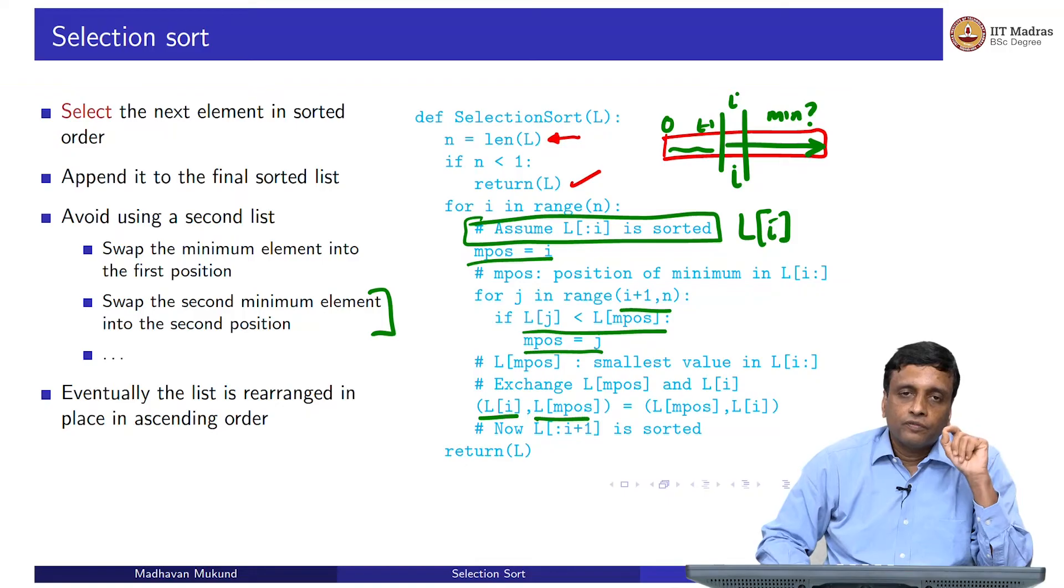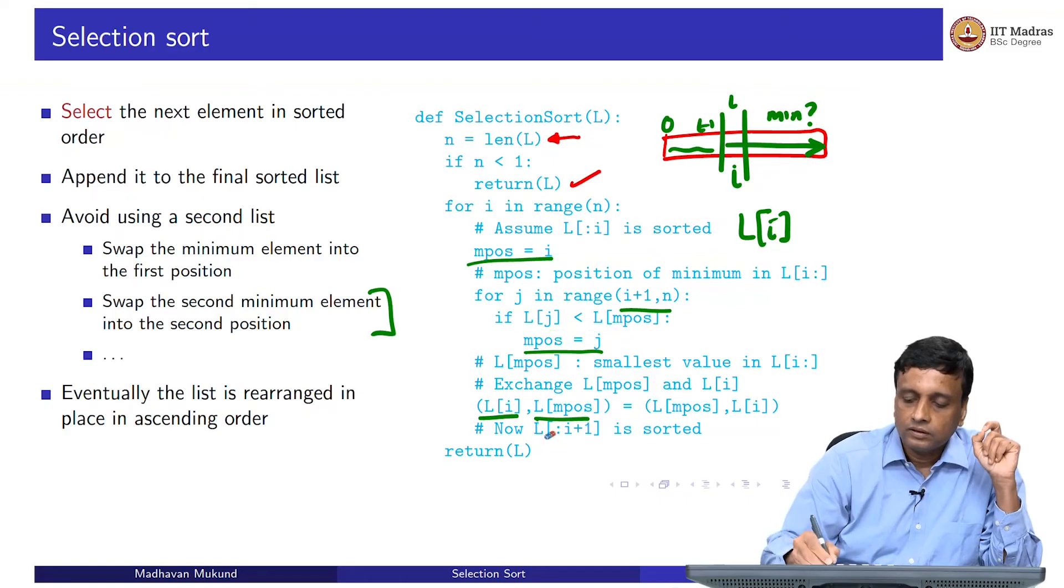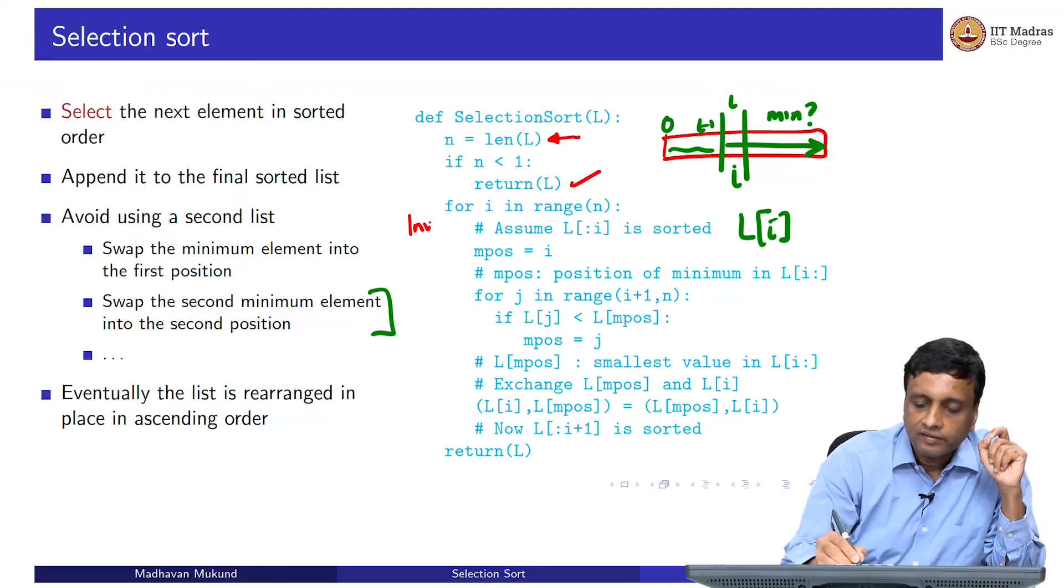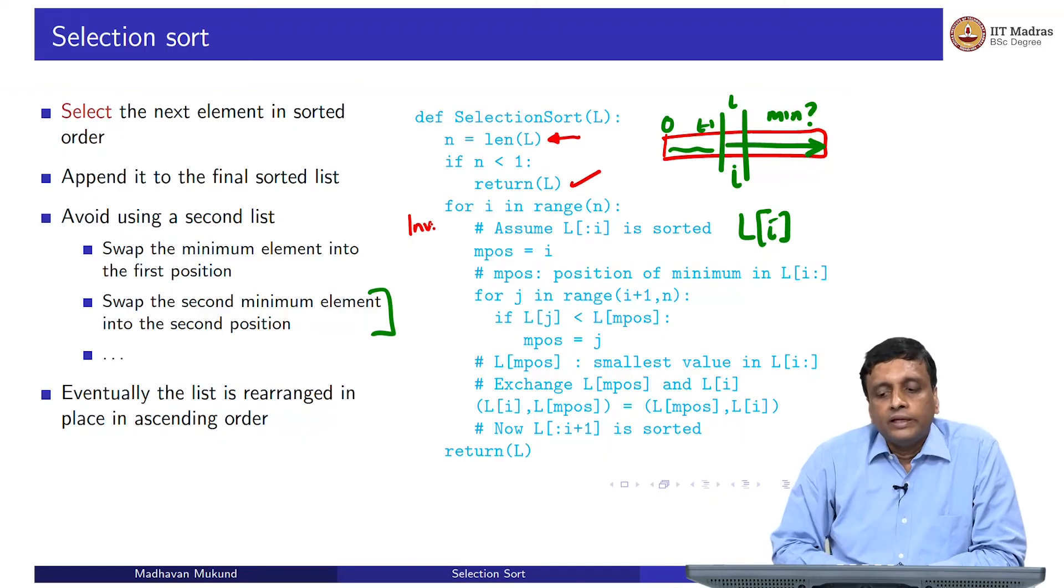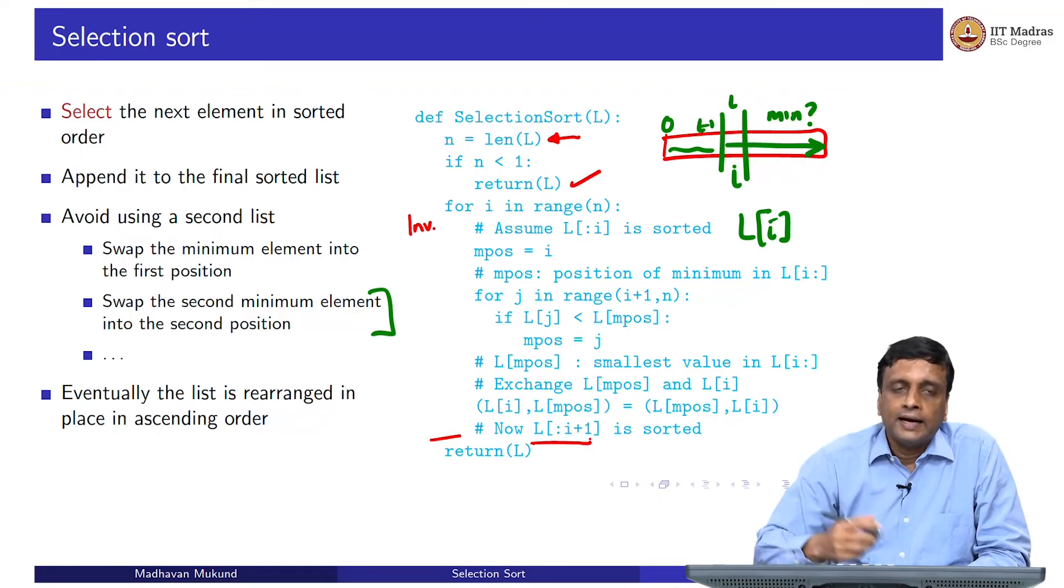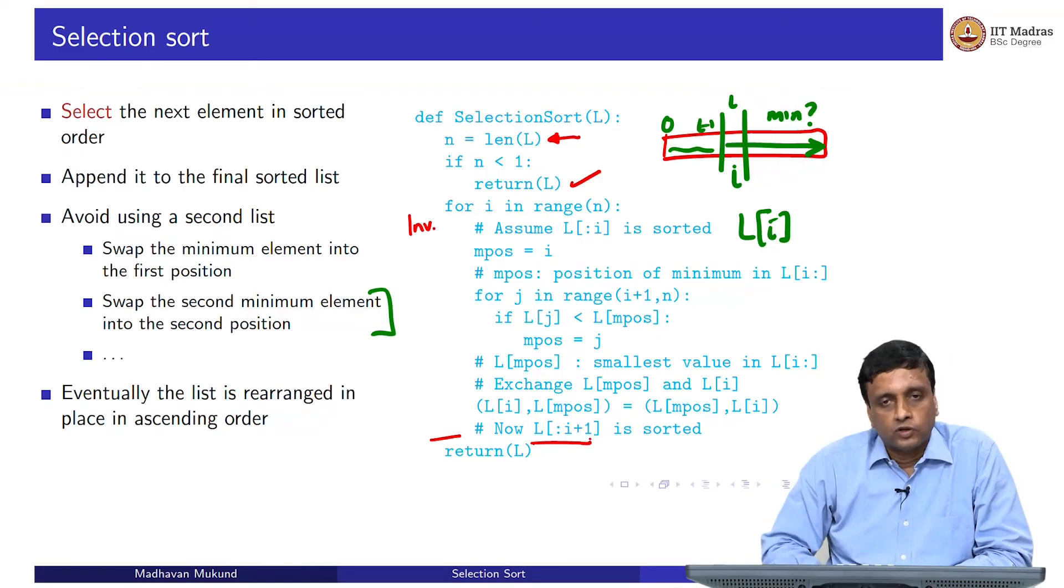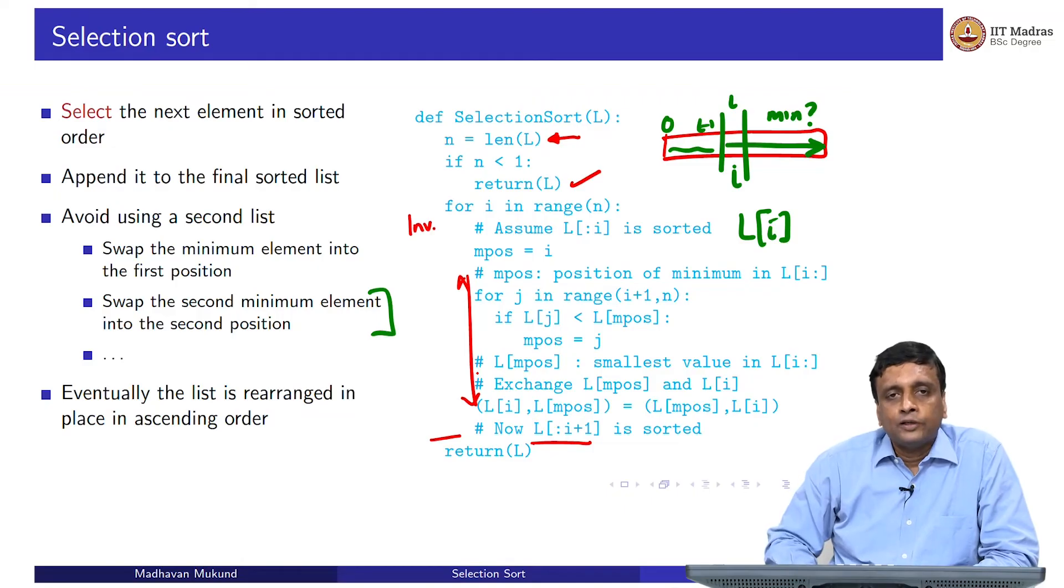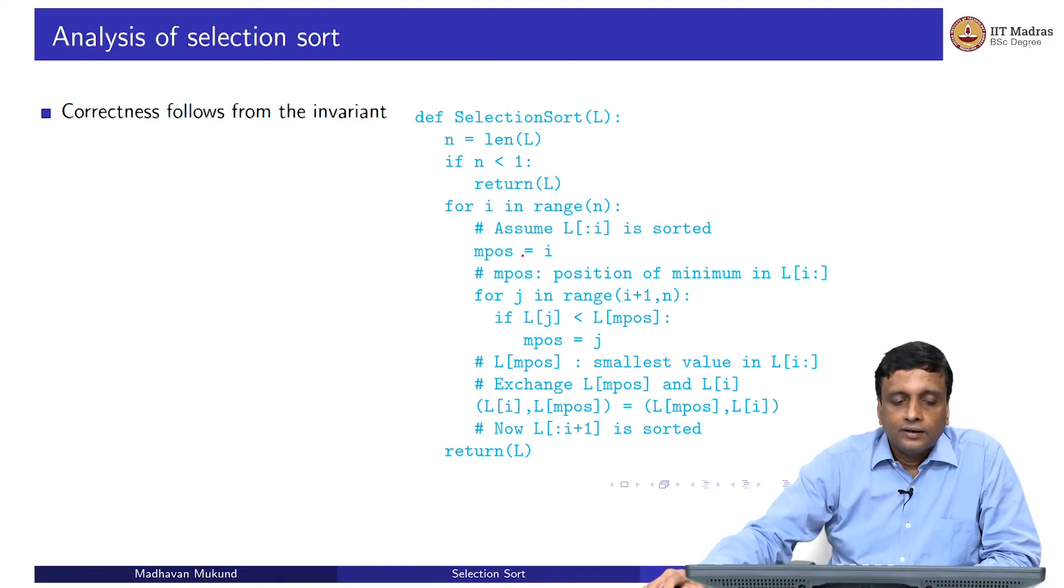It is important to think of these algorithms in this way, because unless you do this it is not going to be possible to really convince yourself you have handled it properly. These are what are called invariants. At the beginning of the loop, the invariant that I have is up to i is sorted, that is 0 to i minus 1 in terms of indices. What the loop does is it extends the invariant to one more step. Earlier I had L colon i was sorted, now L colon i plus 1 is sorted. Then you have to verify that what happens here is a valid calculation to ensure that we make this progress from L 0 to i to L 0 to i plus 1.